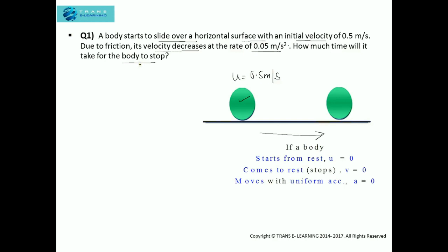We need to find the time it will take the body to stop. When a body comes to rest, the final velocity is 0. Now, if you get confused about which value is velocity and which is acceleration, just check the units: the one with second squared is acceleration, whereas if there is just one second, it is a velocity. Here, as the unit is meter per second squared, it represents acceleration. And since the velocity is decreasing, this is negative acceleration or retardation.